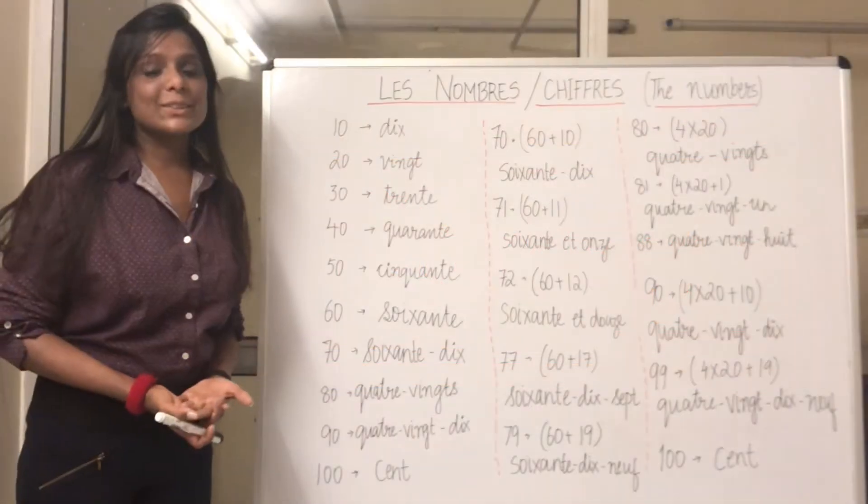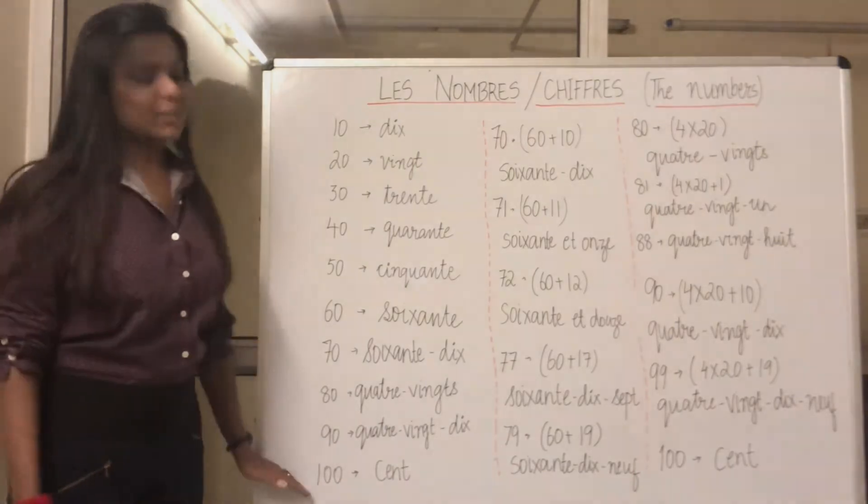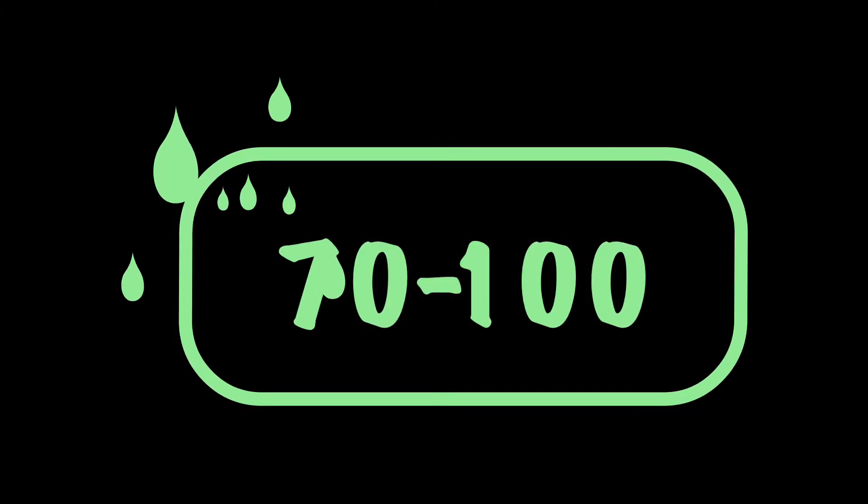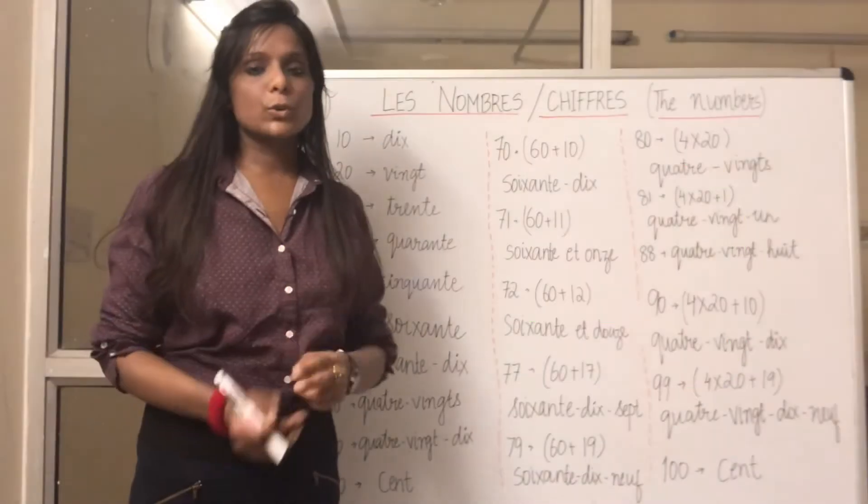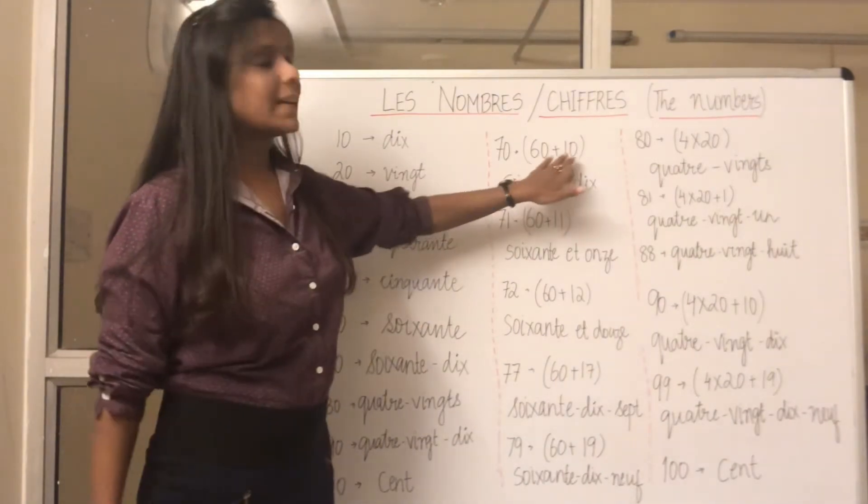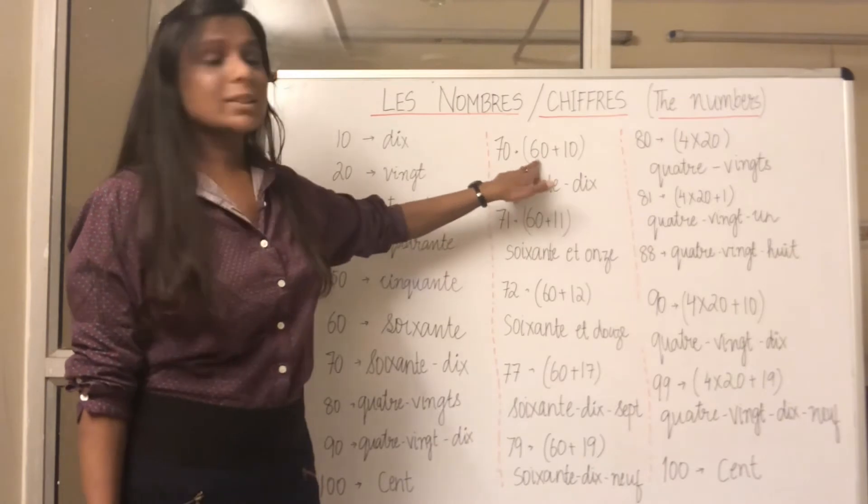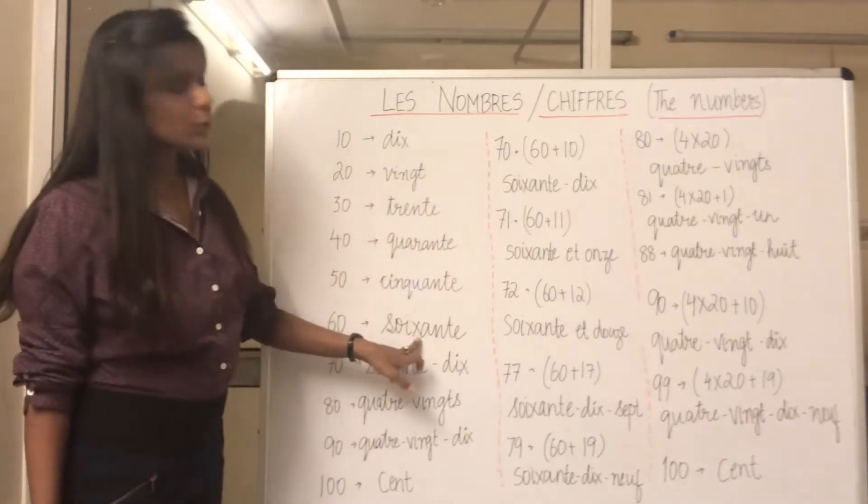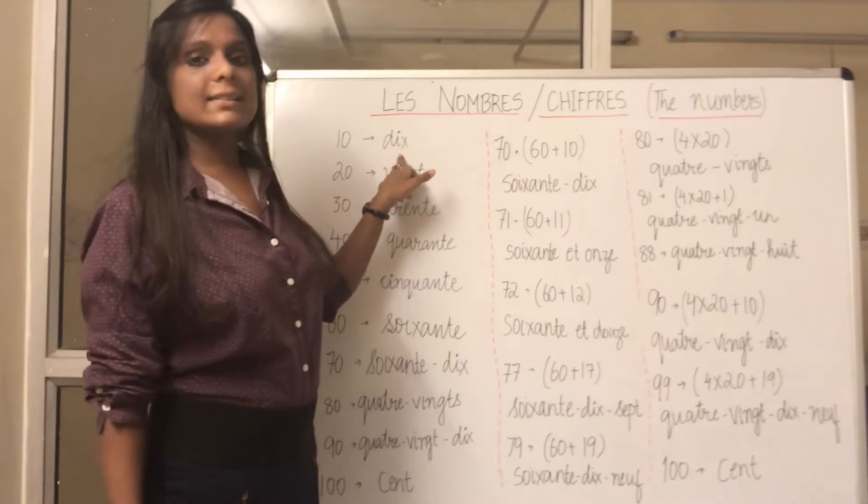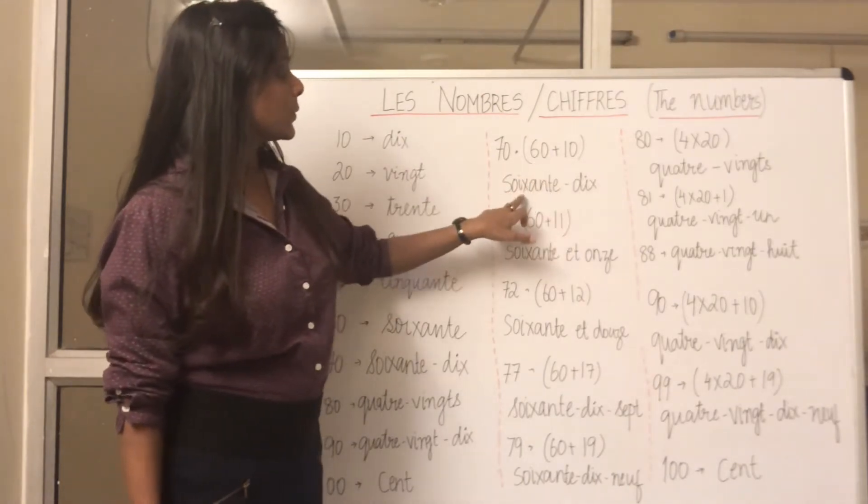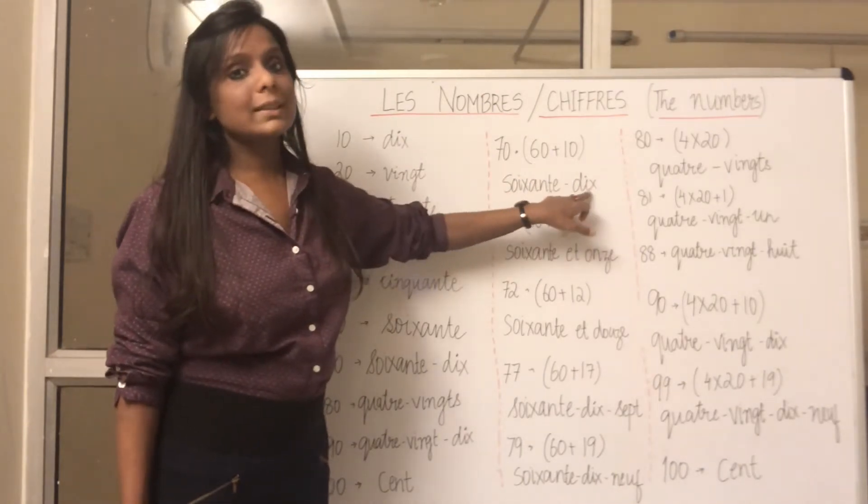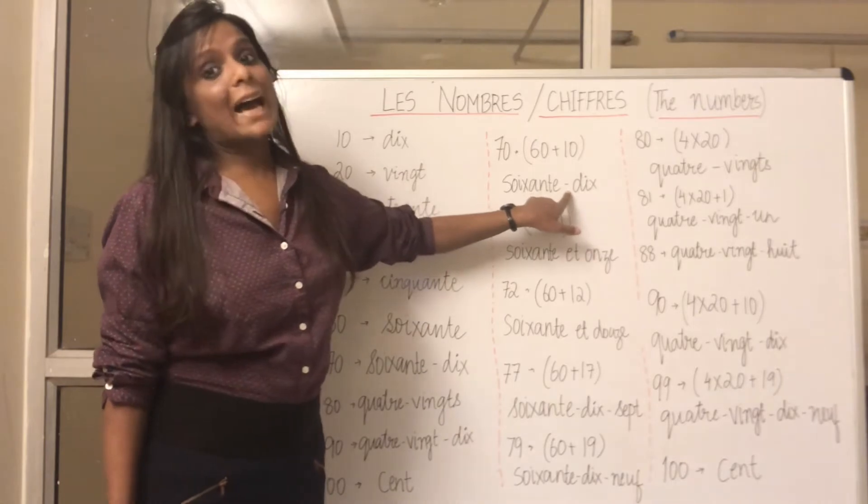Alright, so let's do the counting from 70 to 100 now. 70 is split into two numbers which is 60 and 10. So 60 plus 10 becomes 70. So what is 60? 60 is soixante and what is 10? Dix. So 60 plus 10, so you write soixante-dix.